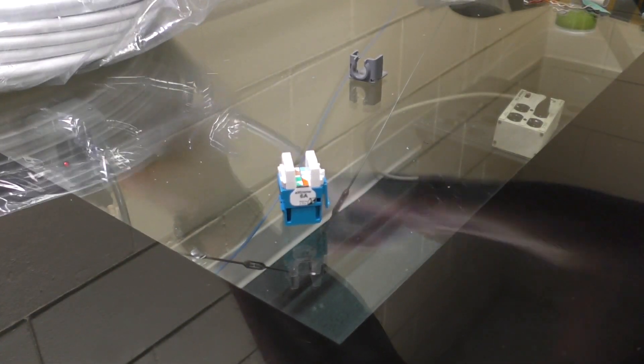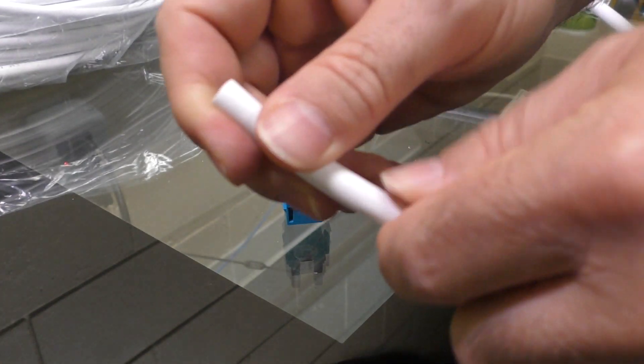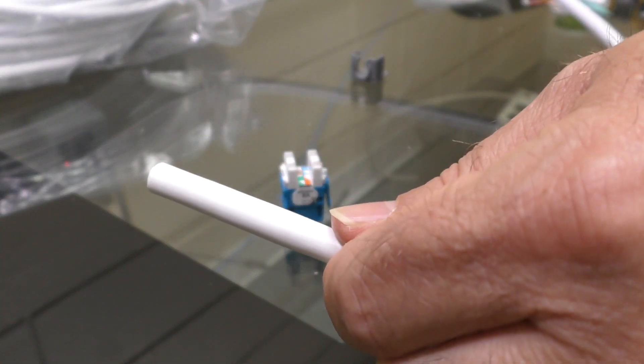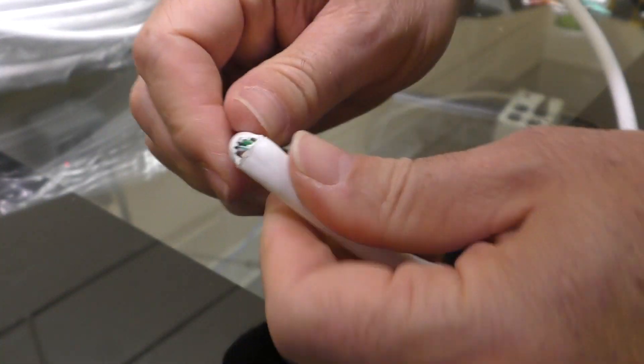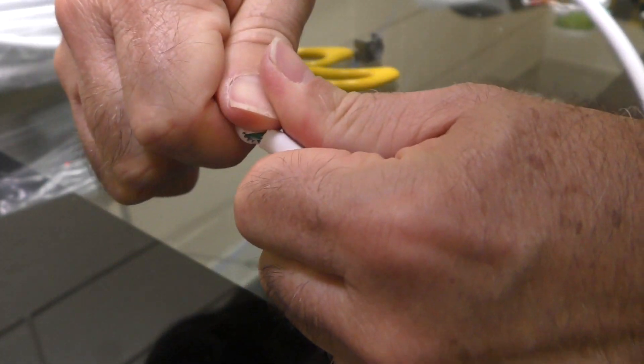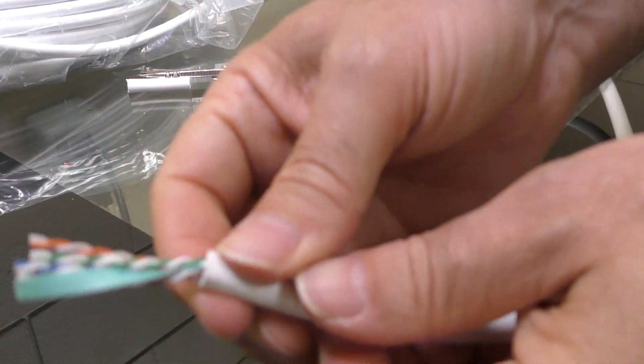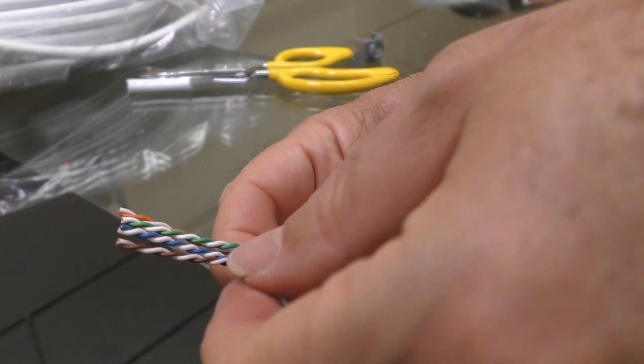I want to start by cutting off some of the insulation. I have found my strippers don't work so well on this, so I've just resorted to using my snips. I just take my snips and score the cable a little bit here, break it open, pull off the jacket. There are my conductors inside.